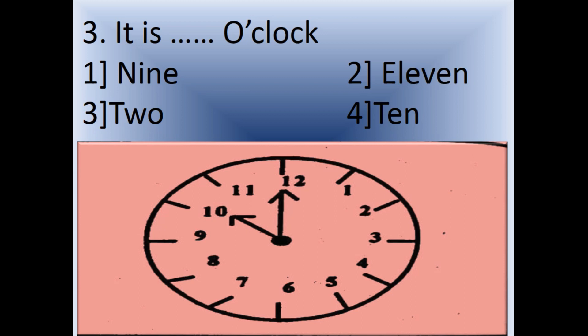Question 3: It is dash o'clock. Options: 1) 6, 2) 11, 3) 2, 4) 10. Look at the clock. See, the shorthand is on 10, longhand is on 12. So option number 4. It is 10 o'clock.